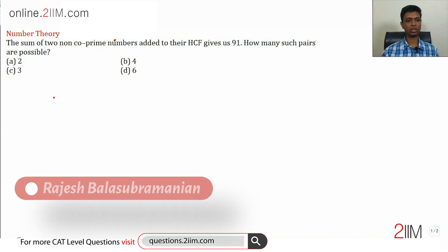Again, a wonderful question. The sum of two non-coprime numbers added to their HCF gives us 91. How many such pairs are possible?